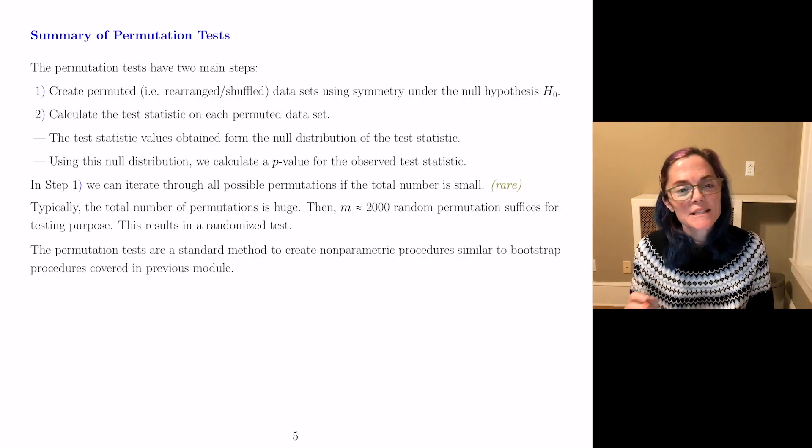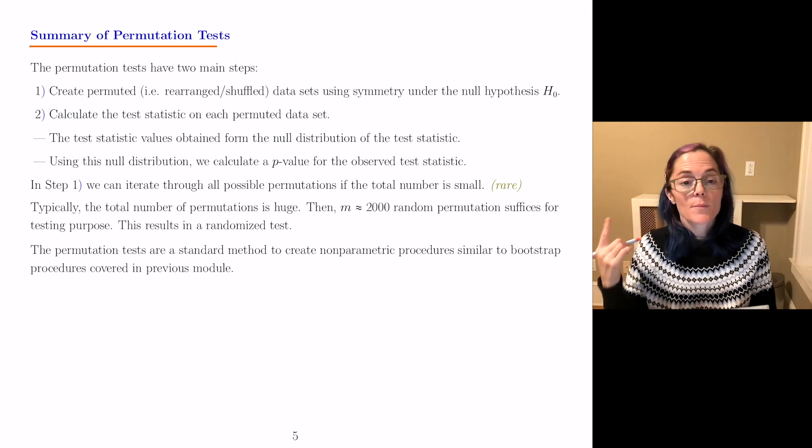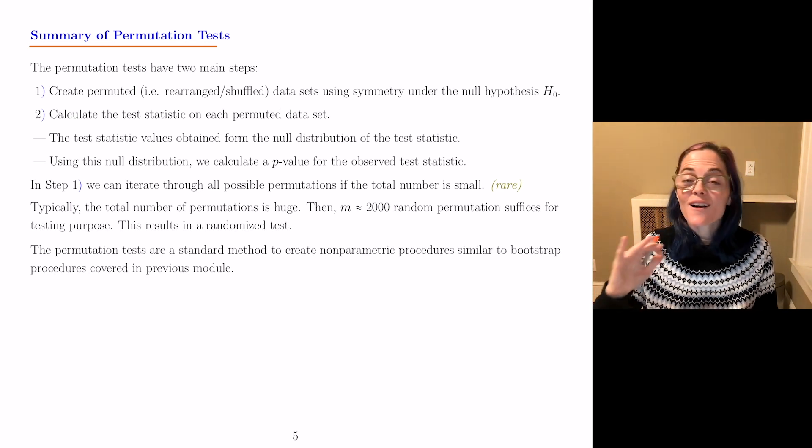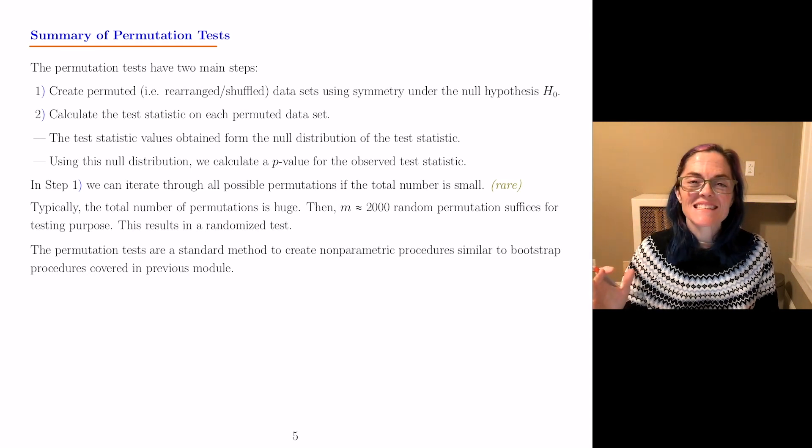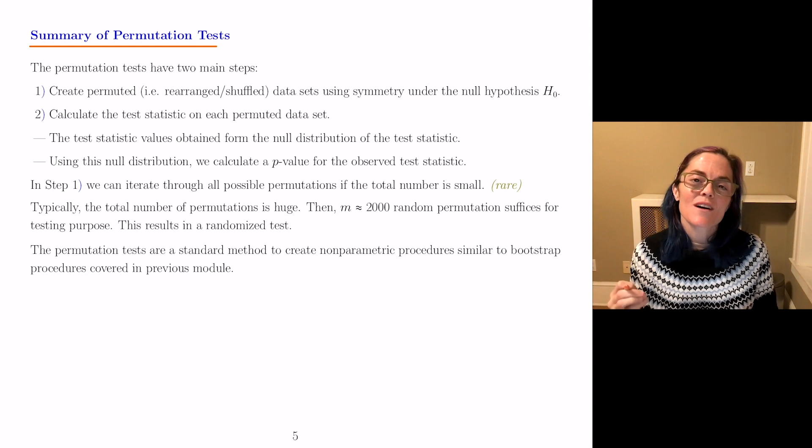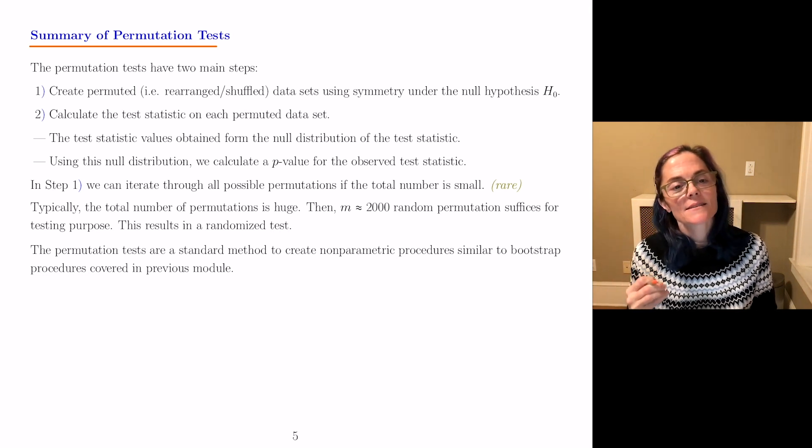What I'd like to do is close with a summary of the permutation tests, and then you can work through some R commands built into Canvas to really practice them and realize that the Wilcoxon sign test is a permutation test.